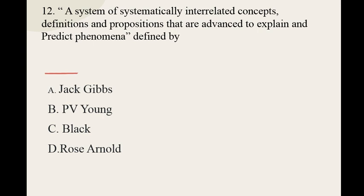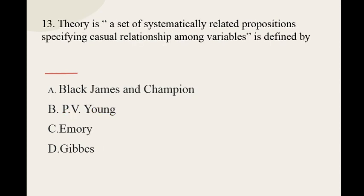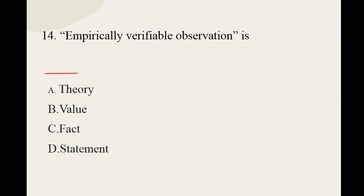The correct option for question number twelve is P.V.N. Question number thirteen: Theory is a set of systematically interrelated propositions specifying causal relationships among variables — this is defined by Black, James and Champions, and P.V.N.